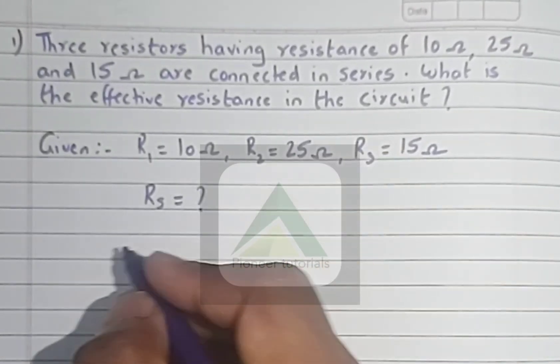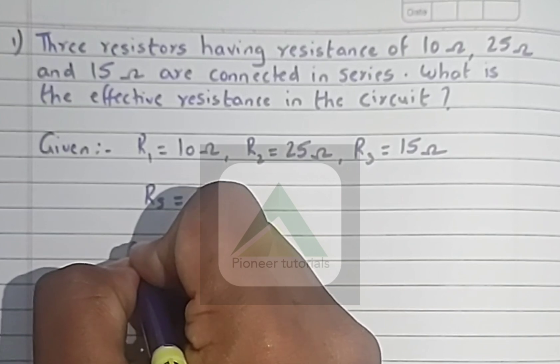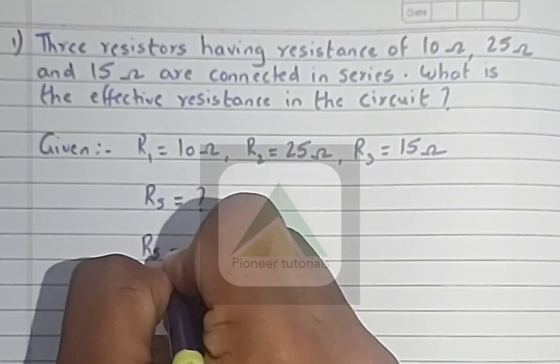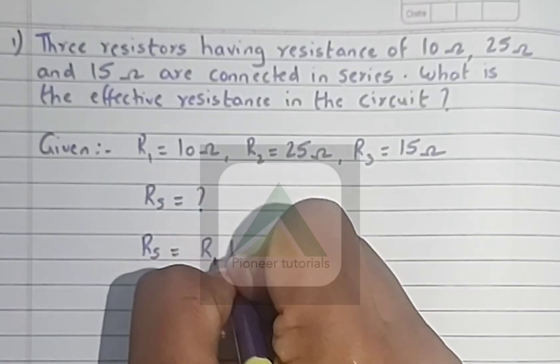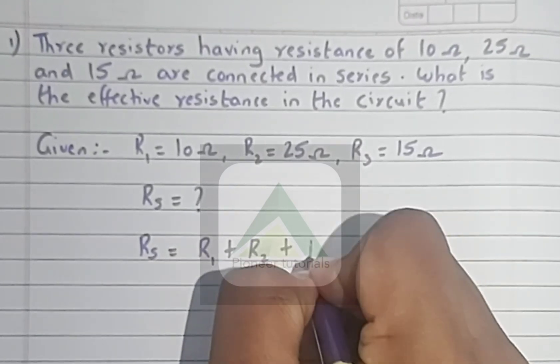So what is the formula for the resistance in series? The total effective resistance: Rs equals R1 plus R2 plus R3.